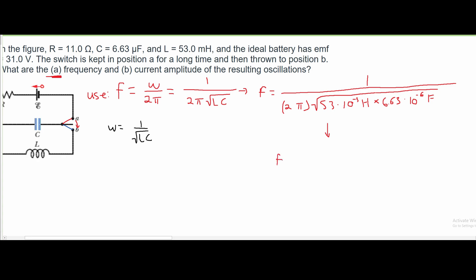And this is all underneath 1. So our frequency, after we plug it into a calculator, is just going to be equal to 268.5 if we round it. And the units for this is hertz. So this is the answer for part A.